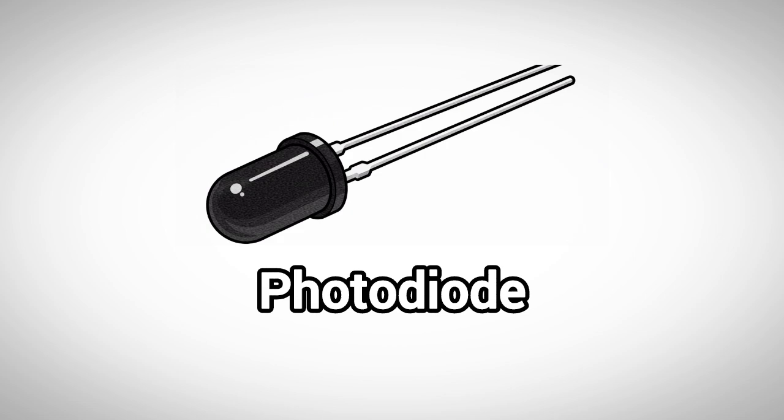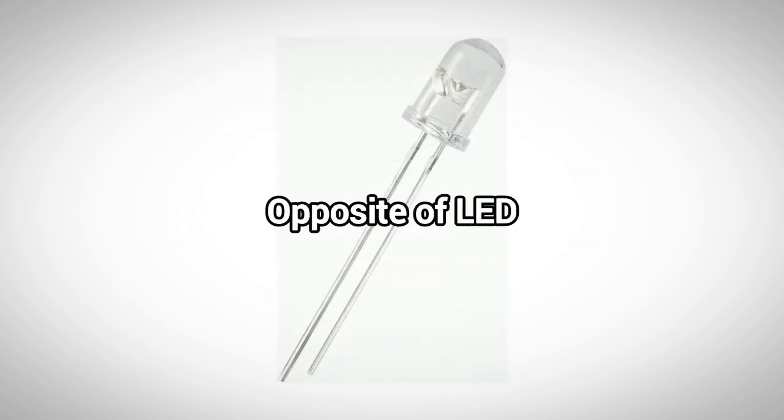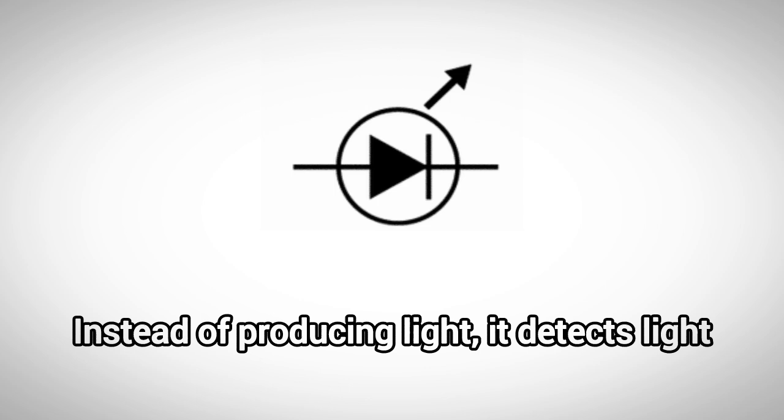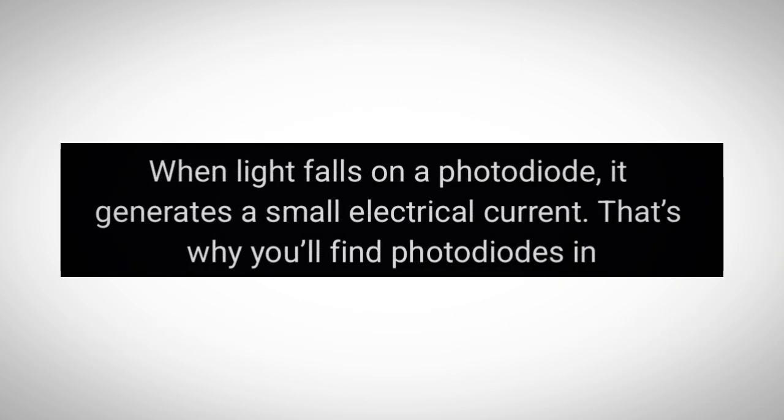Now, let's talk about another type of diode, the photodiode. This one works in the opposite way of an LED. Instead of producing light, it detects light. When light falls on a photodiode, it generates a small electrical current.